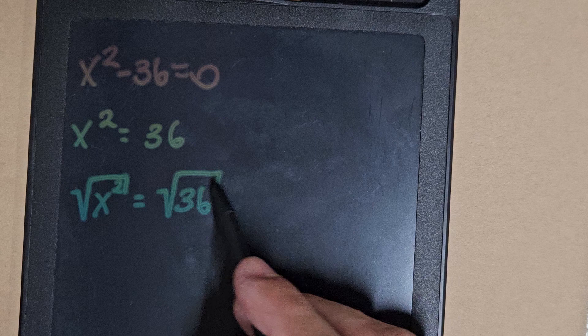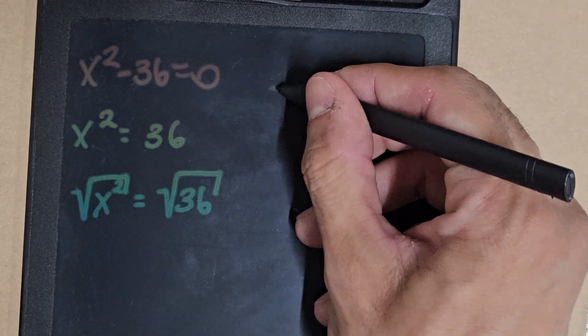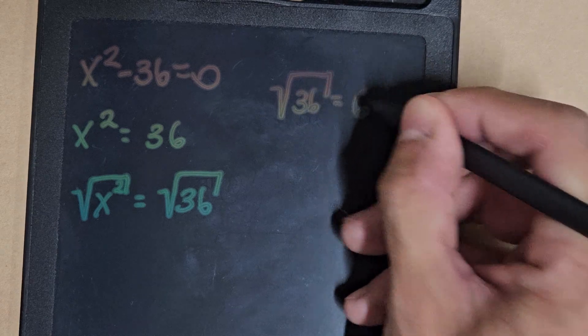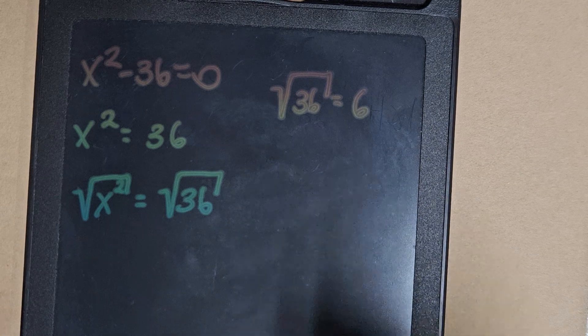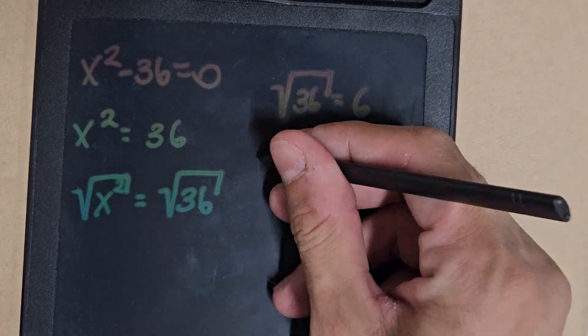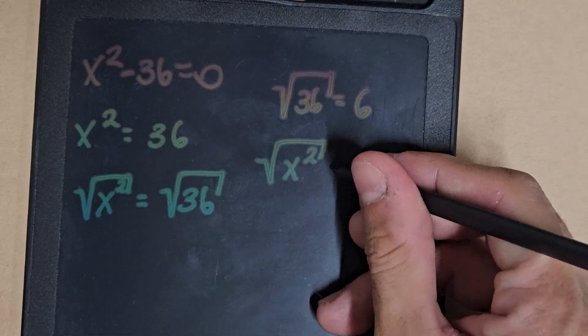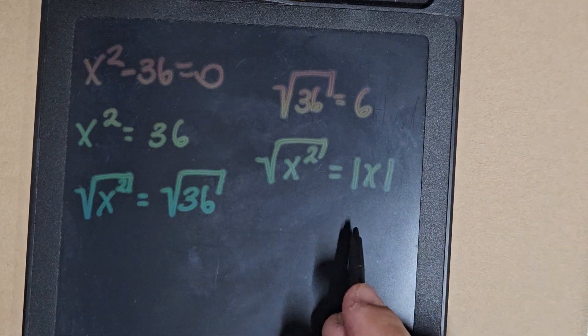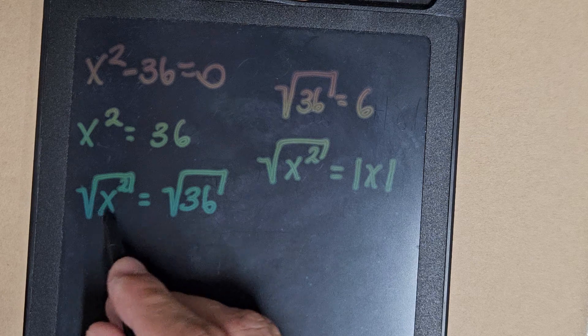This notation is for the principal square root, and square root of 36 is just 6 by definition. We have that the square root of a number to the power 2 is the absolute value of that number. Okay, so the answer...